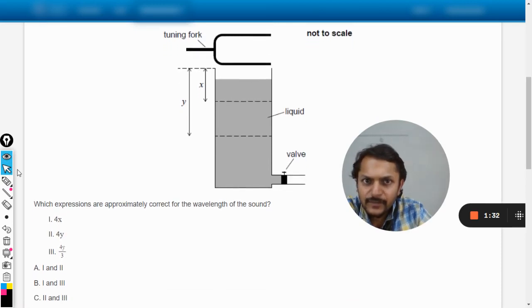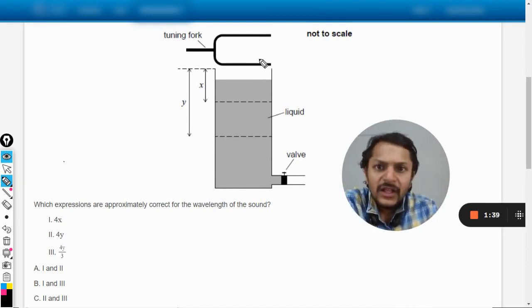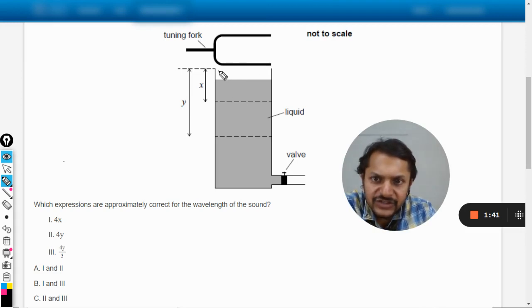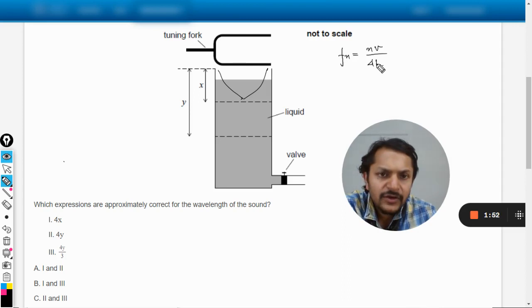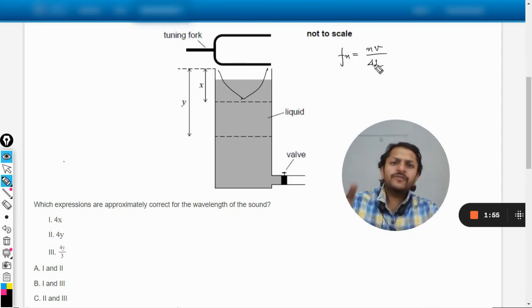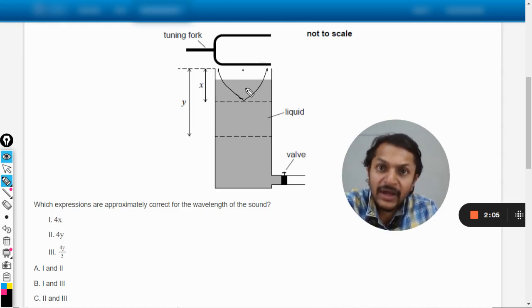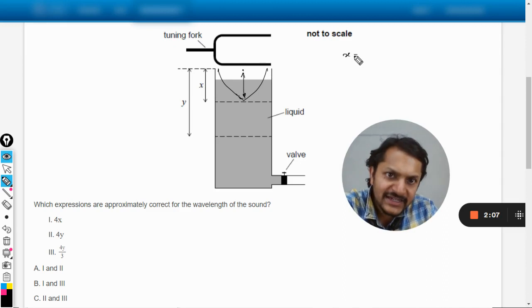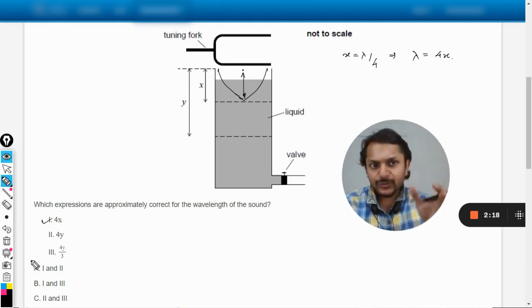Let us see which expression is the correct expression for the wavelength. This is x and the first harmonic is taking place here. If this is the first harmonic, I can always say that this thing is lambda by 4. So x is equal to lambda by 4, and from here I can say that lambda is equal to 4x. Yes, this is how we do it. The first option is correct, so wavelength can be expressed as 4x.